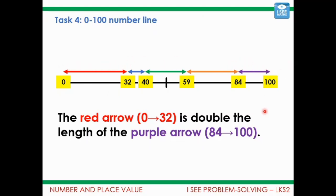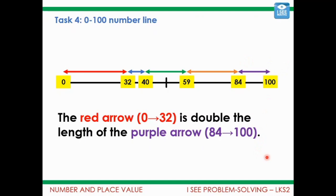How about this one: the green arrow is slightly longer than the purple arrow because 40 to 59, that's 19. Is that gap slightly bigger than this one, this gap of 16?